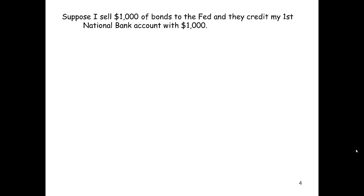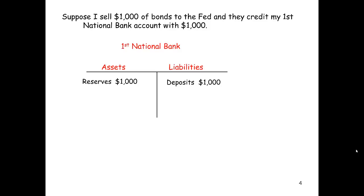Let's suppose I sell $1,000 of bonds to the Fed and they credit my First National Bank account with $1,000. It's useful to look at the balance sheet of First National Bank using a simple T-account that distinguishes assets from liabilities. This transaction results in an increase in reserves of $1,000 — those are assets of the bank — and also an increase in deposits of $1,000, which are considered liabilities.